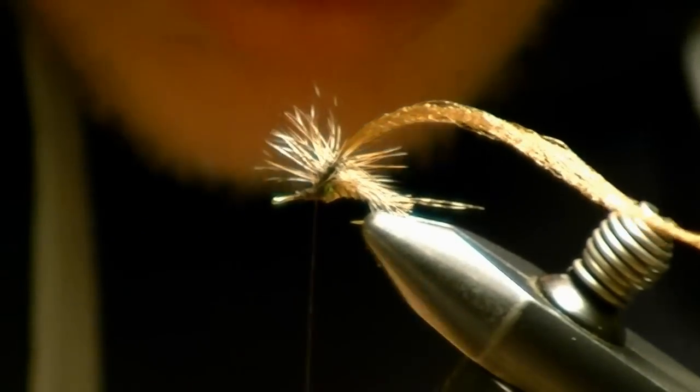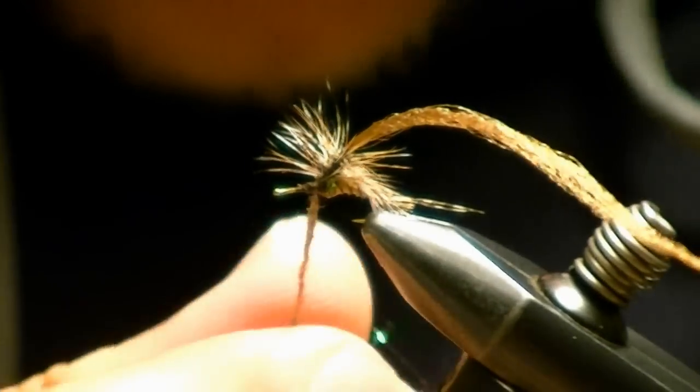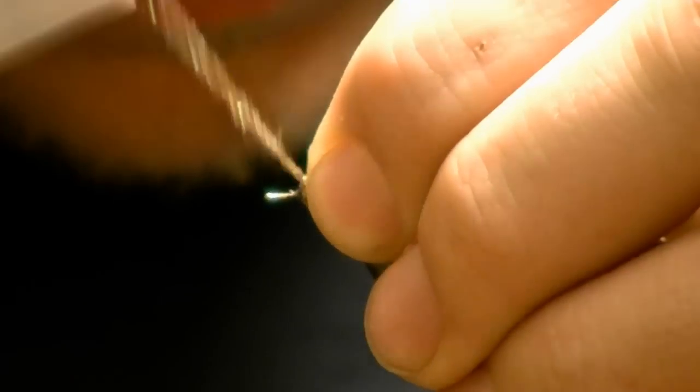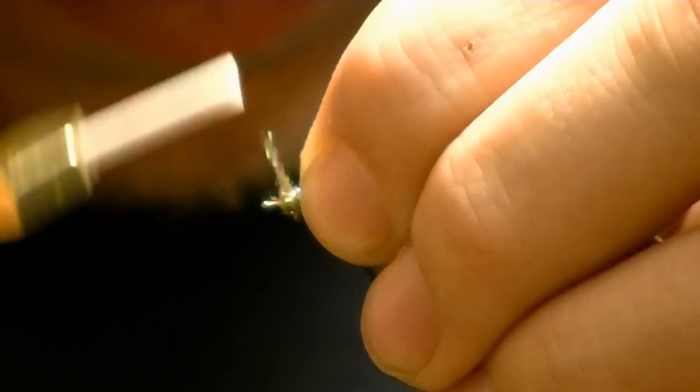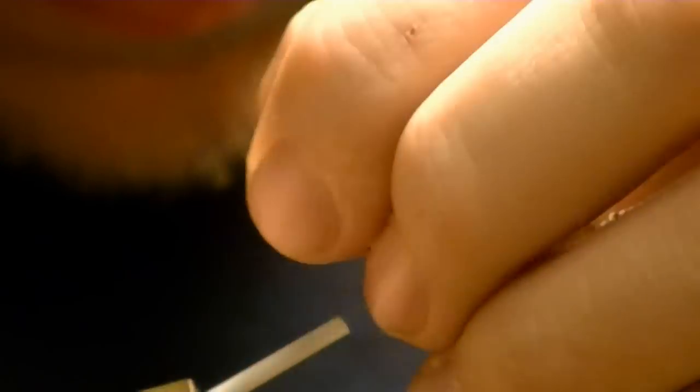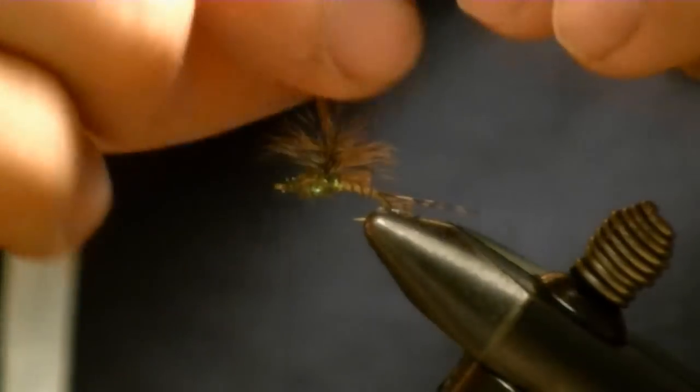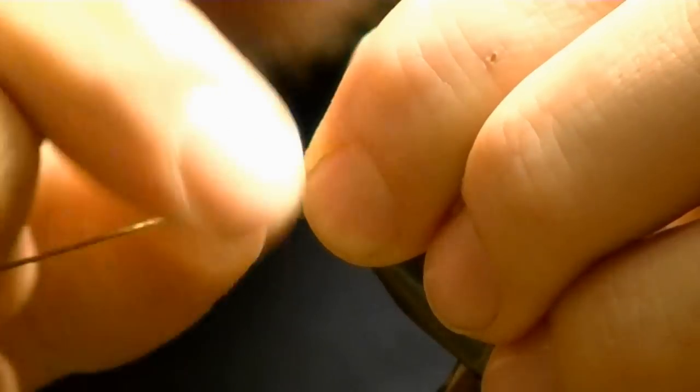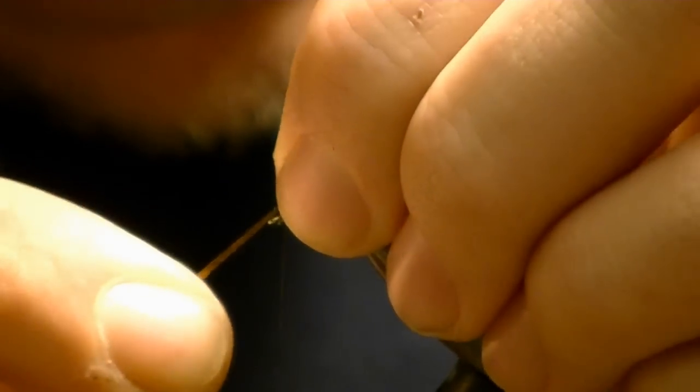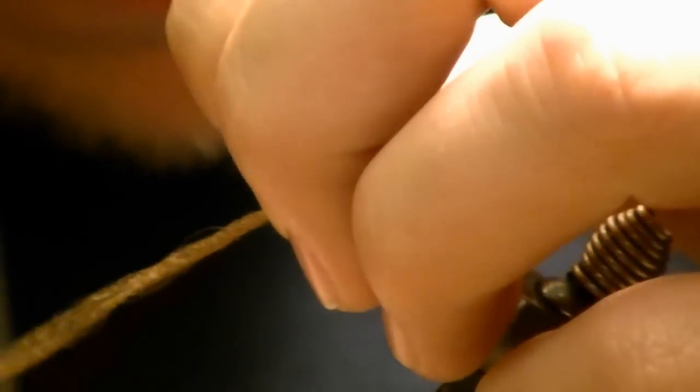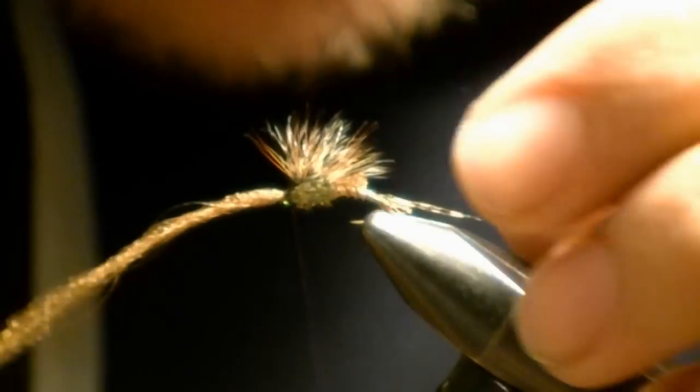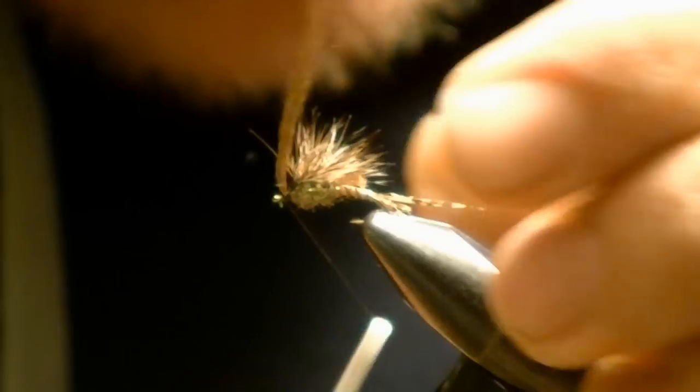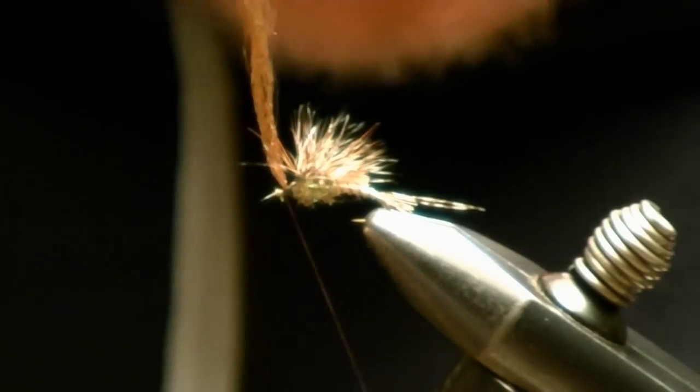I'm gonna take some more ice dub and dub your thorax section. Move the fibers back, bring it over the top. Tie down, bring it straight up.